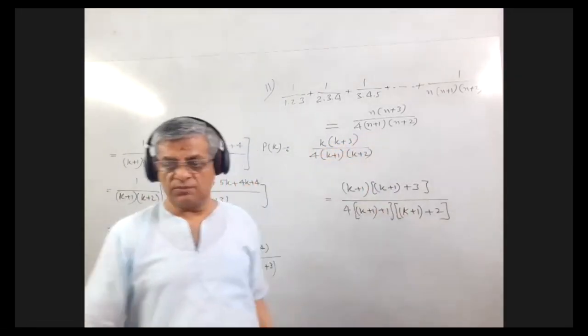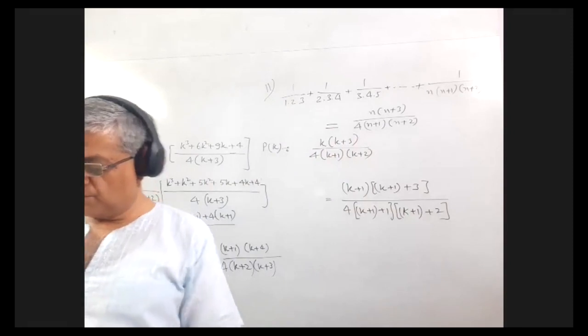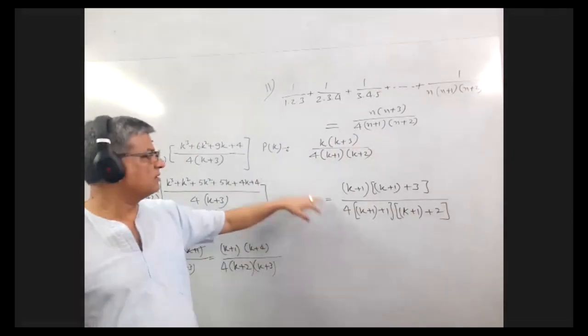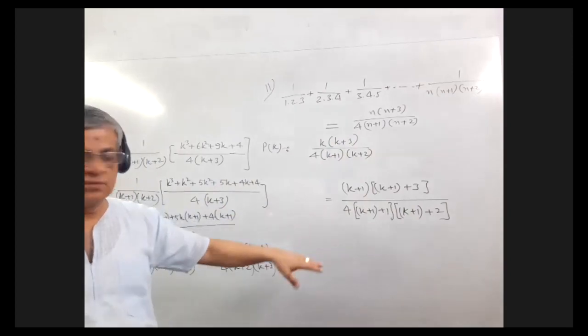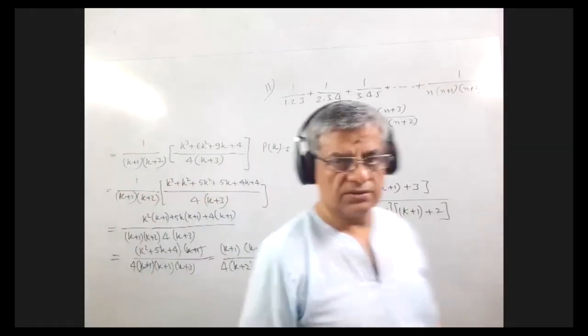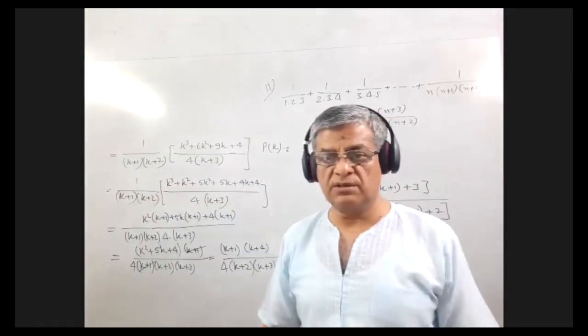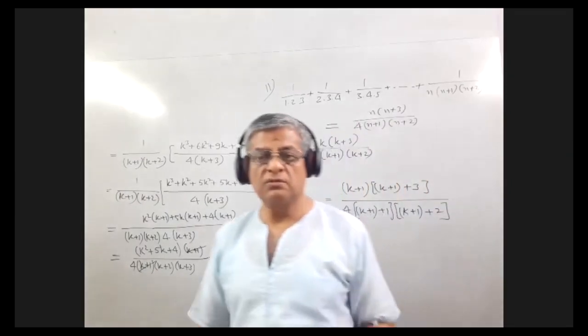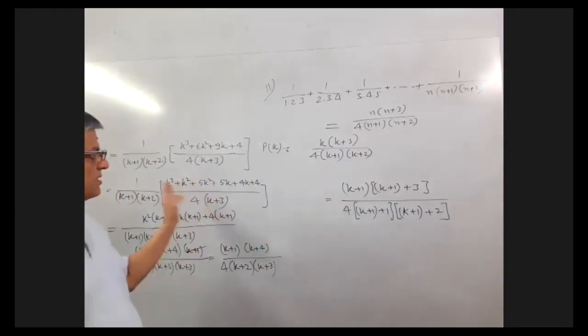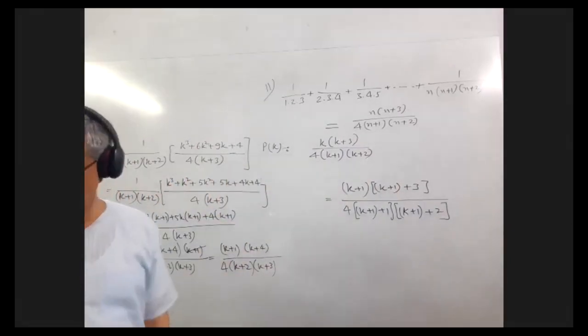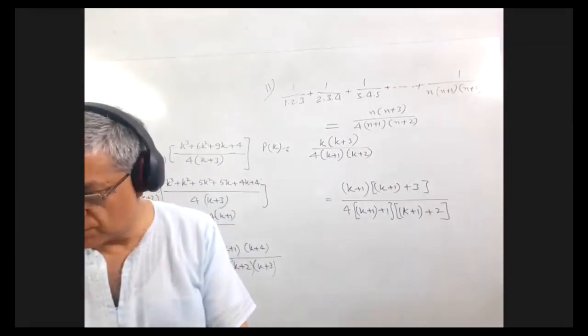So we see that P(k+1) is true. Therefore, we can see that the given expression is true for all values of n belonging to natural numbers. So in this manner we will show you. Okay? Do you understand?